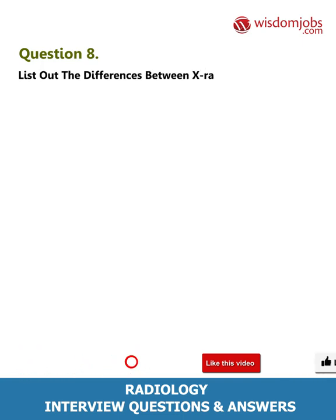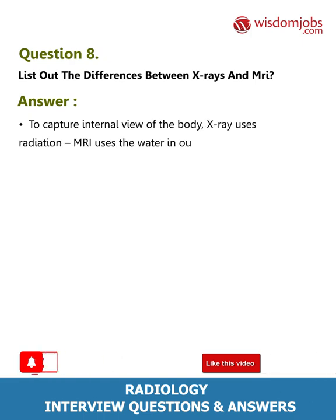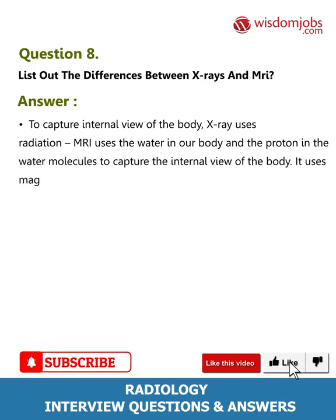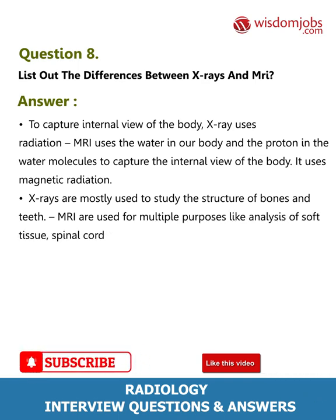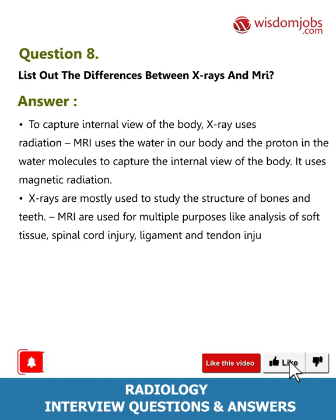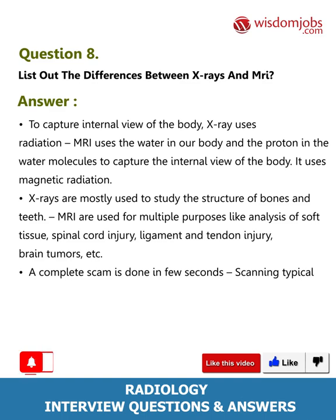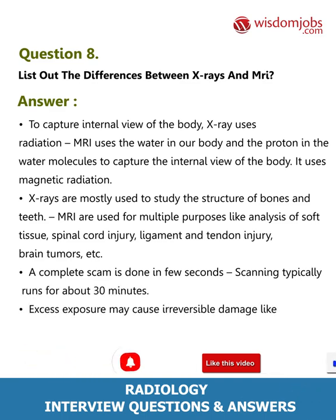Question 8: List out the differences between x-rays and MRI. Answer: To capture an internal view of the body, x-ray uses radiation while MRI uses the water in our body and the protons in the water molecules, using magnetic radiation. X-rays are mostly used to study the structure of bones and teeth, while MRI is used for multiple purposes like analysis of soft tissue, spinal cord injury, ligament and tendon injury, and brain tumors.